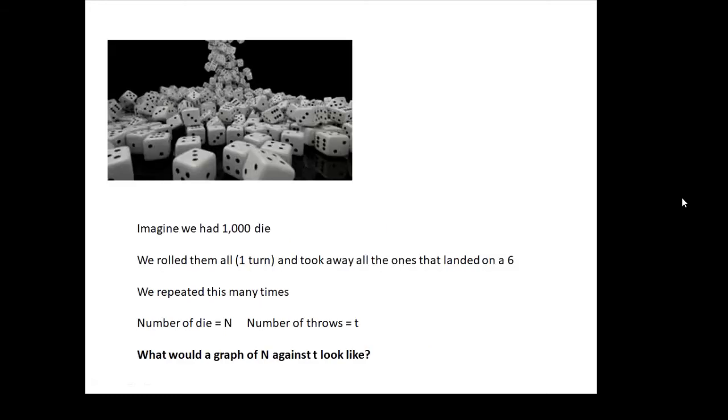Here's another example. Imagine we had a thousand die or dice. And we roll them all. And all the ones that land on a six, we take them away. And we do that again and again and again. And the number of die is n. And the number of throws is t. What would a graph of n against time look like? In other words, the number of die that we have left against time, what would it look like?